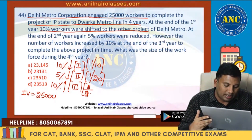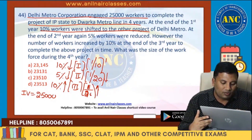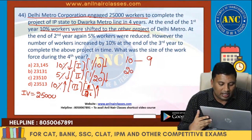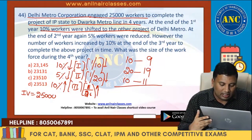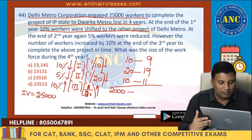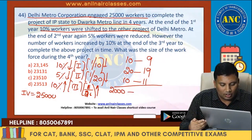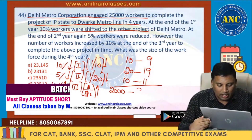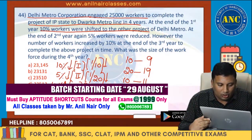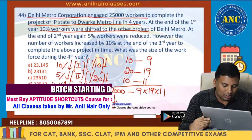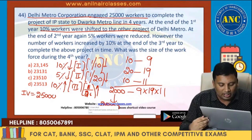So: 1/10 decrease means 9/10 remains, 1/20 decrease means 19/20 remains, 1/10 increase means 11/10. So we have 9 × 19 × 11 over 20 × 10 × 10, which equals 9 × 19 × 11 over 2000. Now with 25,000 as the initial value: 25,000 divided by 2000.